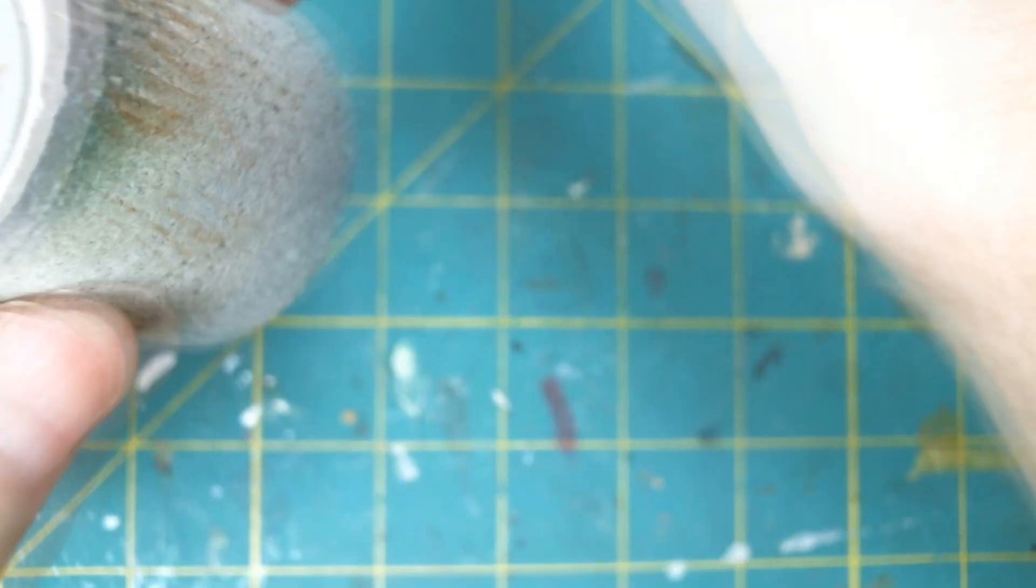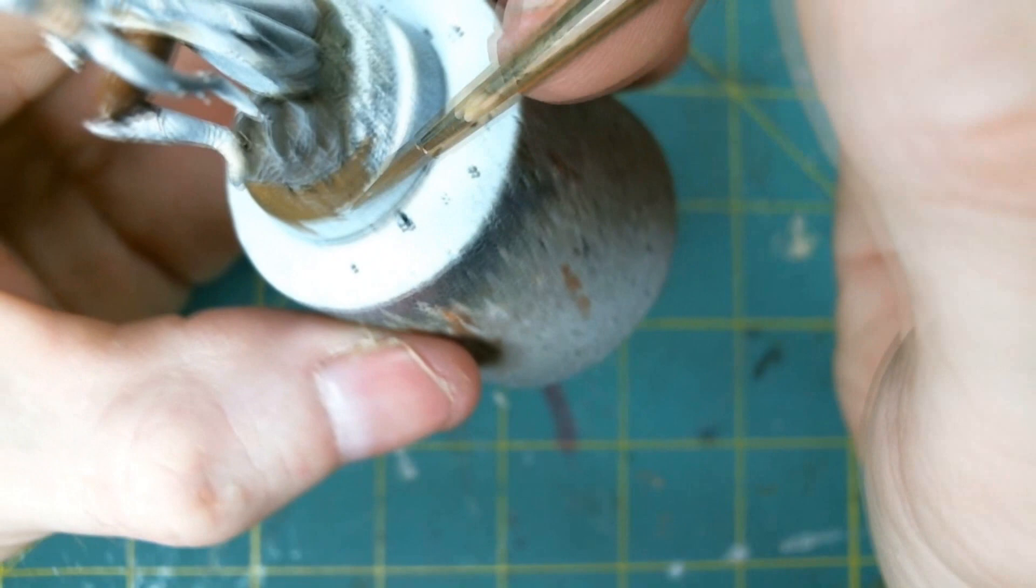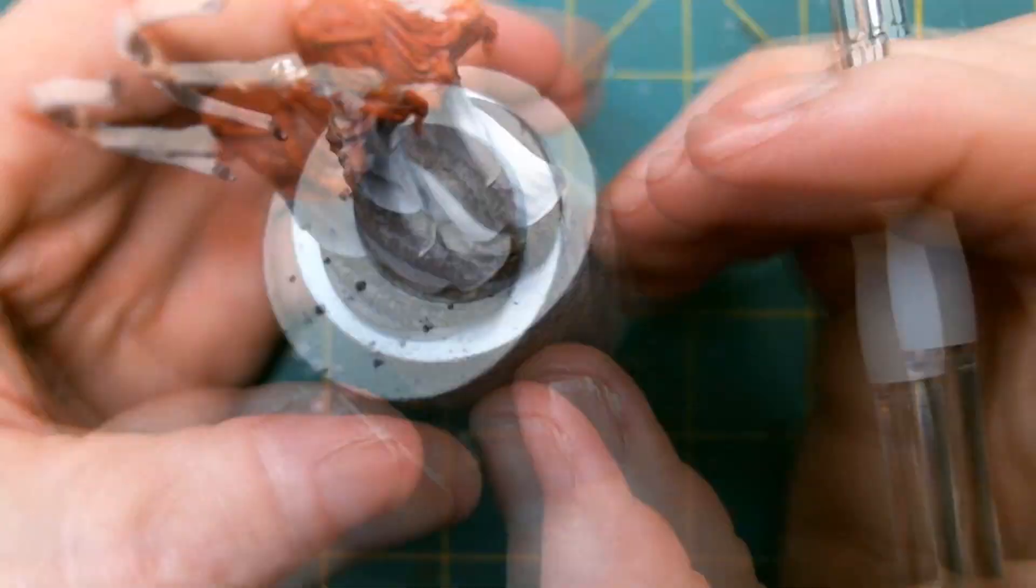Now for the actual earth, I used Vallejo Game Color Earth, followed by a brown wash. And then again just dry brushing charred brown and again the final highlight of just hitting it with that Vallejo Game Color Earth again.